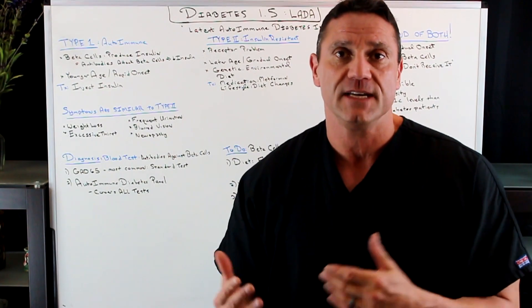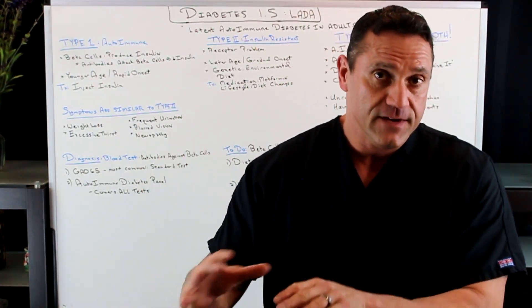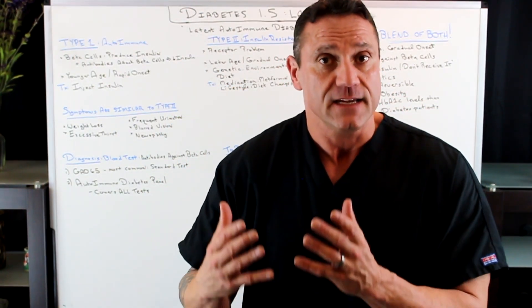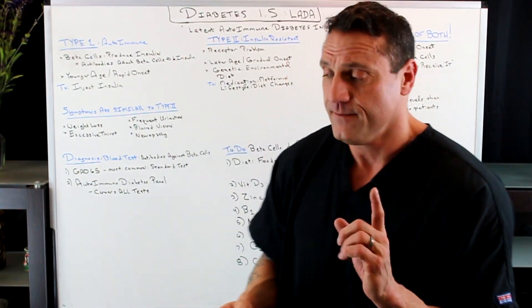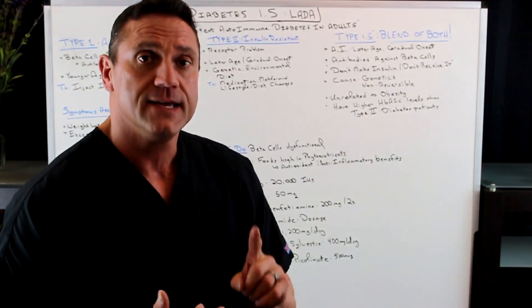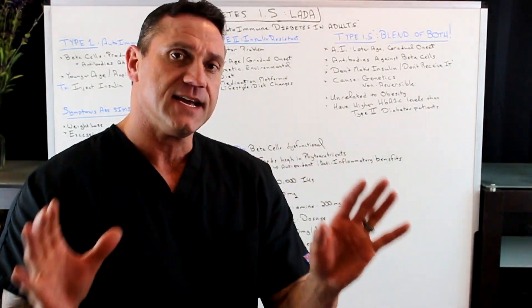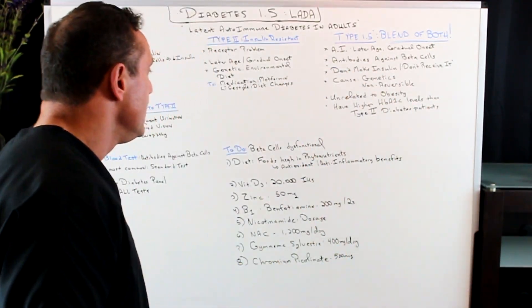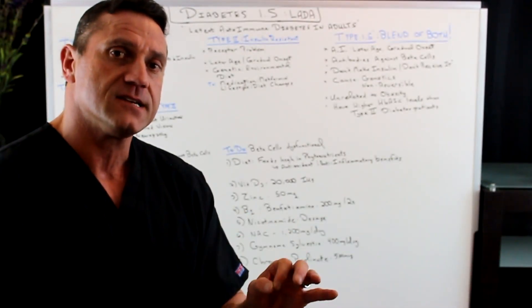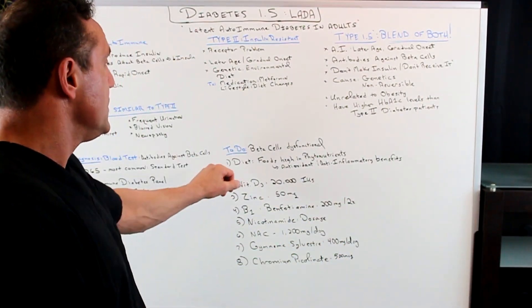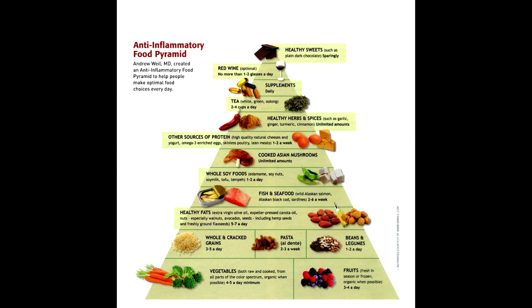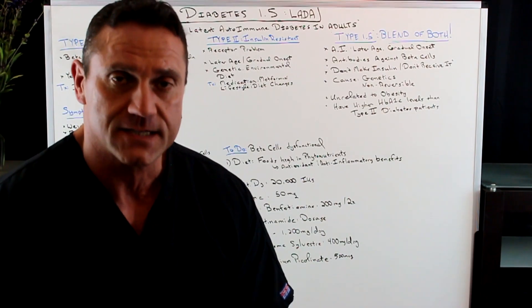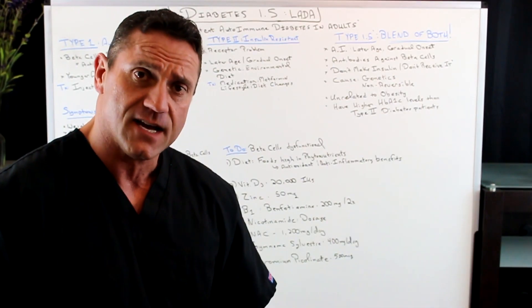If you have diabetes 1.5, it's autoimmune — autoimmune diseases cannot be cured. However, 80% of the symptoms can be helped with diet. You want to clean up the diet: eliminate wheat, gluten, sugar, dairy, soy, and peanuts. That's an anti-inflammatory diet to begin with. Remember, with autoimmune disease your body is attacking itself, so you don't want any more inflammatory triggers. With type 1.5 the beta cells are dysfunctional and damaged, so you want foods high in phytonutrients — your vegetables — which are high in antioxidant and anti-inflammatory benefits, to help calm down the body.